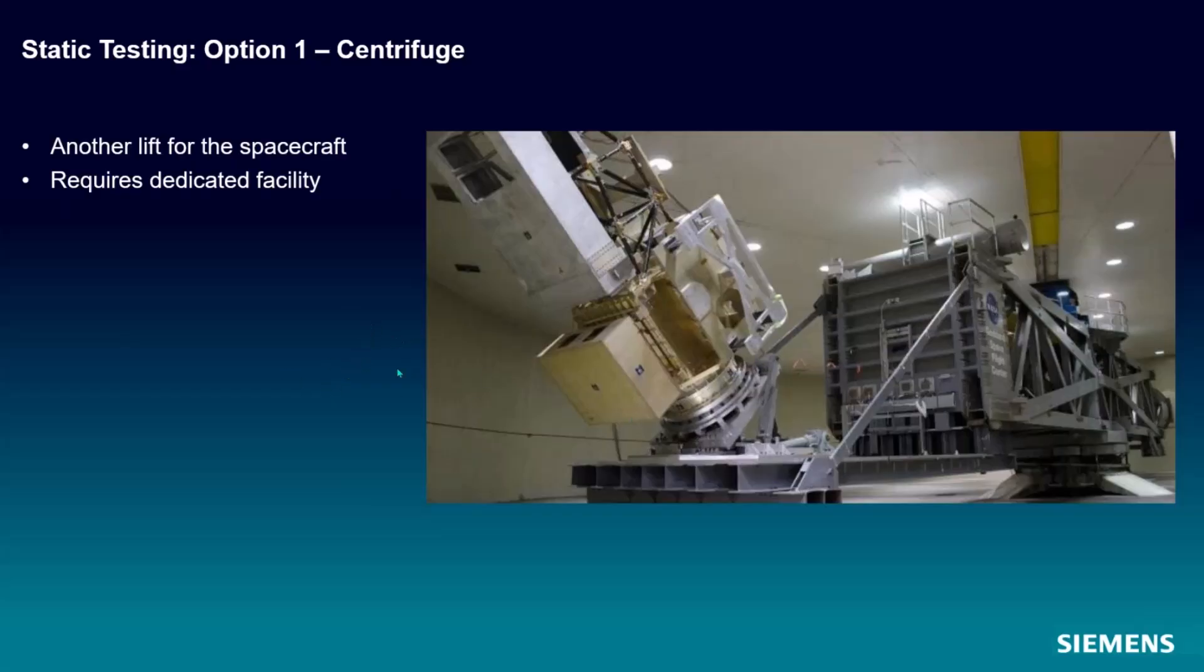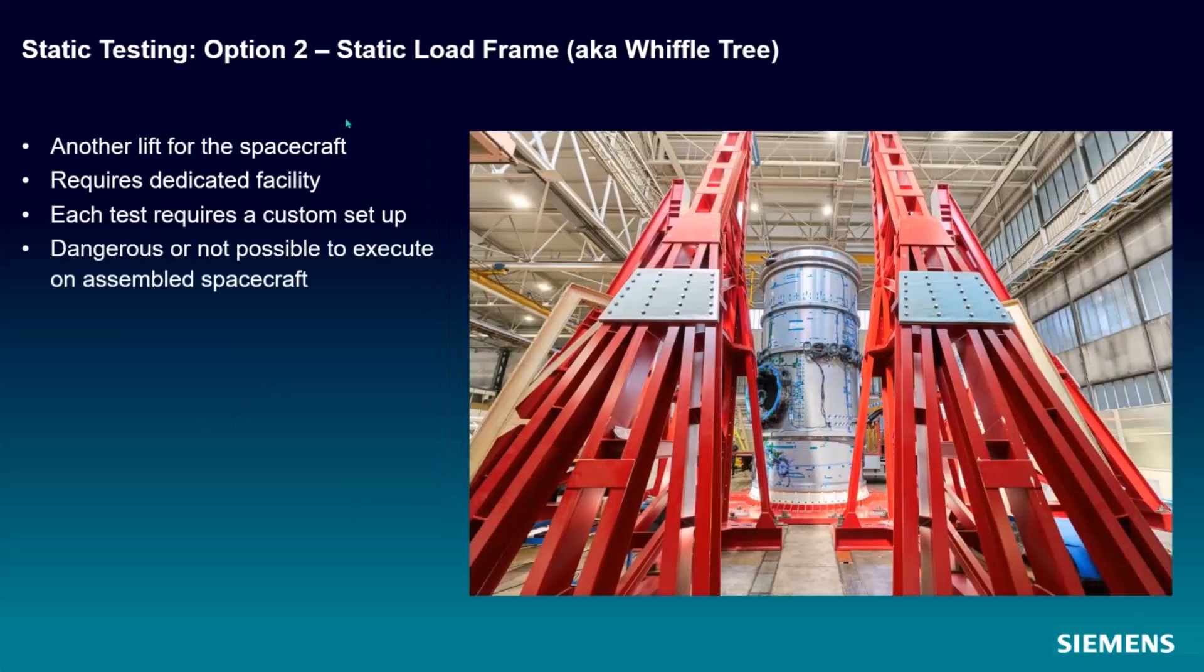That's maybe a less attractive option than maybe option two here, which is a big static load frame. Now, this doesn't require a big centrifuge and all the safety stuff that goes along with that, but we still have a situation where we do need a dedicated facility. It's another lift, another test, another way we have to reorient the spacecraft for testing.